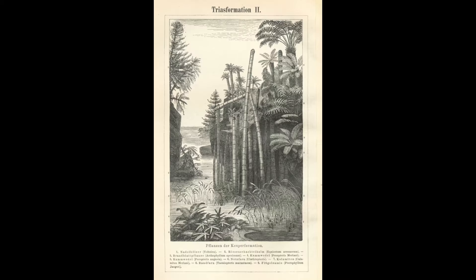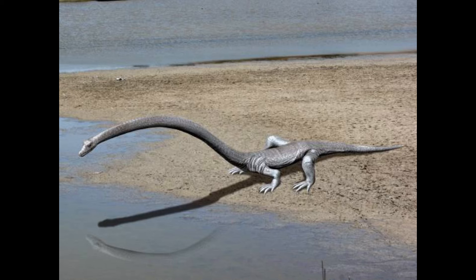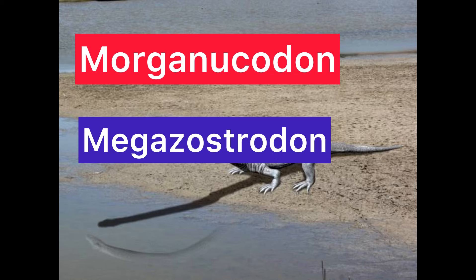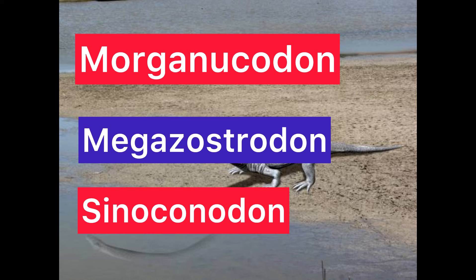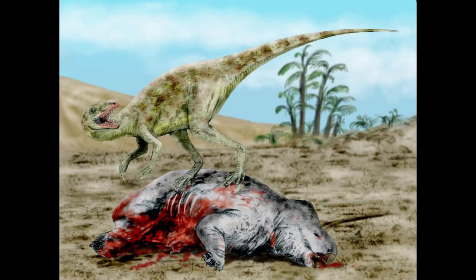The Triassic period — the dawn of mammals — lasting from about 252 to 201 million years ago, was a time of recovery and diversification following the Permian-Triassic extinction. During this period the first true mammals emerged from their cynodont ancestors. These early mammals were small, likely nocturnal, and adapted to a variety of ecological niches. Examples include Morganucodon, Megazostrodon and Kuehneotherium.